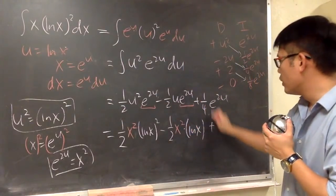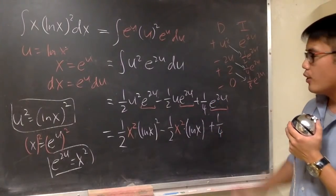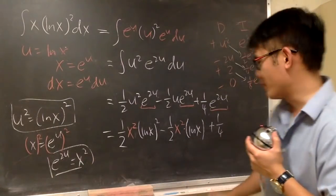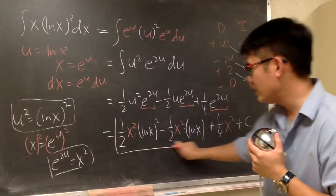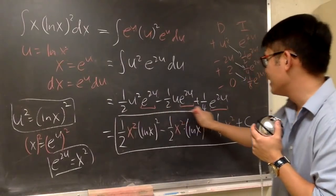And then plus 1 over 4. e to the 2u again. Oh my God. And that's just x squared. And then we are done. Plus C. And we will box this as usual.